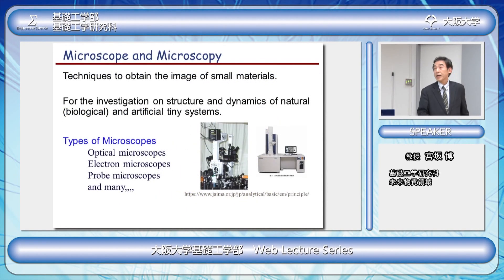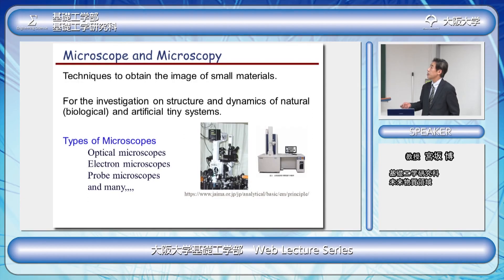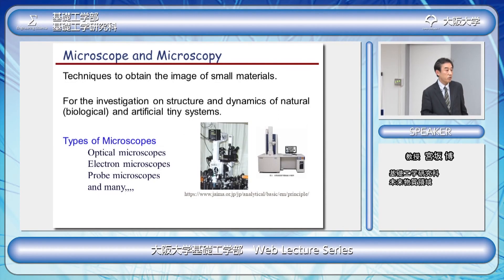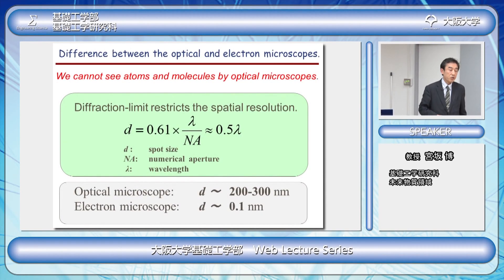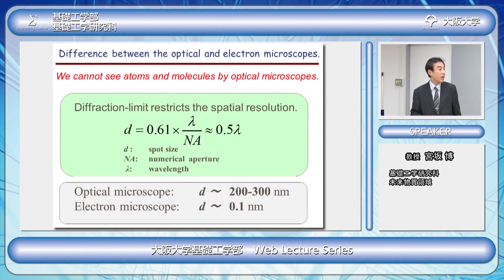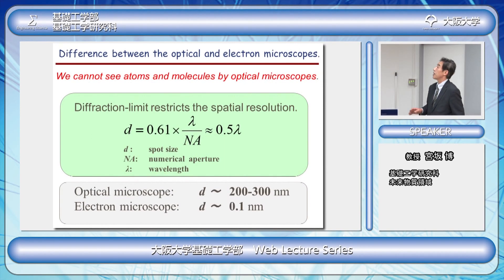Maybe you know microscope and microscopy. Microscopy is one of the techniques to obtain the image of small materials and has been used for the investigation of structure and the dynamics of natural, biological, and artificial tiny systems. We can find many kinds of microscopes such as optical microscopes, electron microscopes, probe microscopes and many others. Among them, I think the optical microscope is the most popular one — even elementary school students can use it in science class.